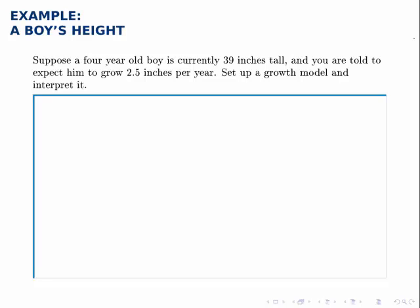Suppose a four-year-old boy is currently 39 inches tall, and you're told to expect him to grow an average of about 2.5 inches per year. These are reasonable numbers, and we don't see a problem right away. But if we set up a growth model and project forward in time, we'll find that eventually this model stops making sense.